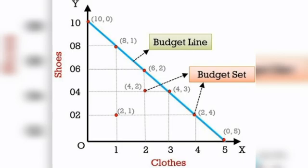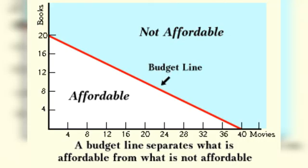The next topic is the consumer budget, or budget line. What is a budget? It shows the purchasing power of the consumer — the consumer's income. The budget line is a line showing different possible combinations of two goods that a consumer can afford. Any combination on the line is affordable; combinations outside the line are not affordable by the consumer.